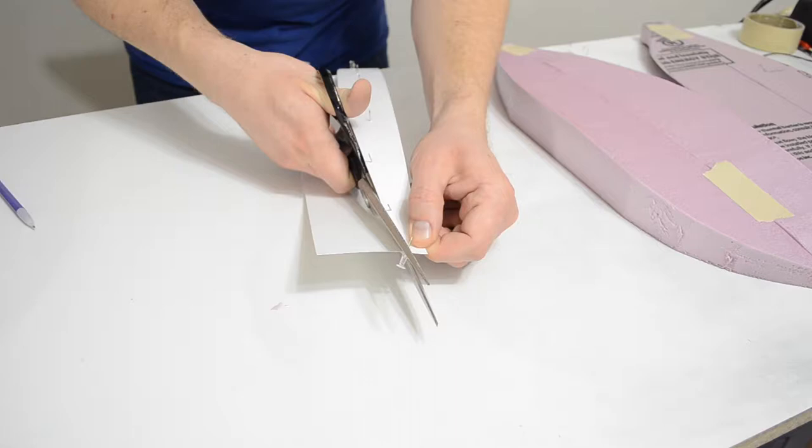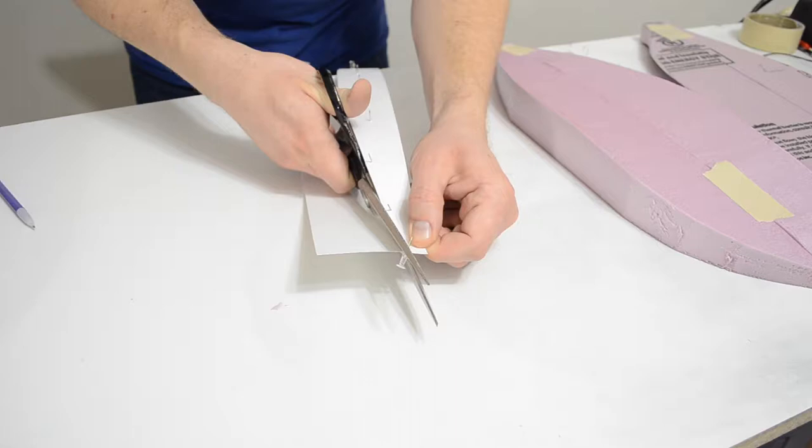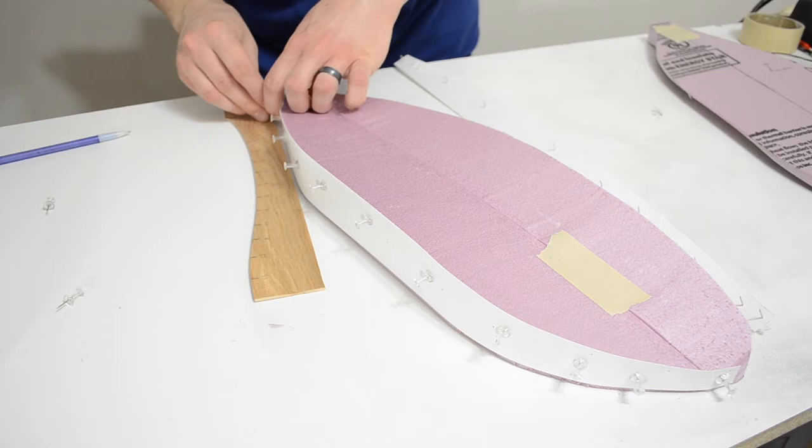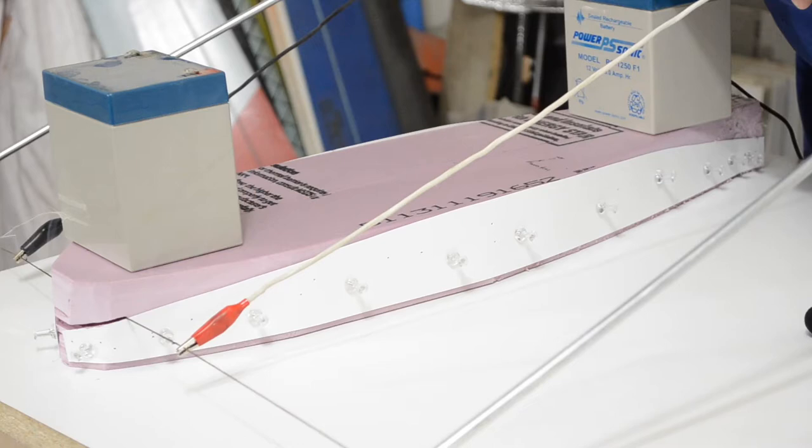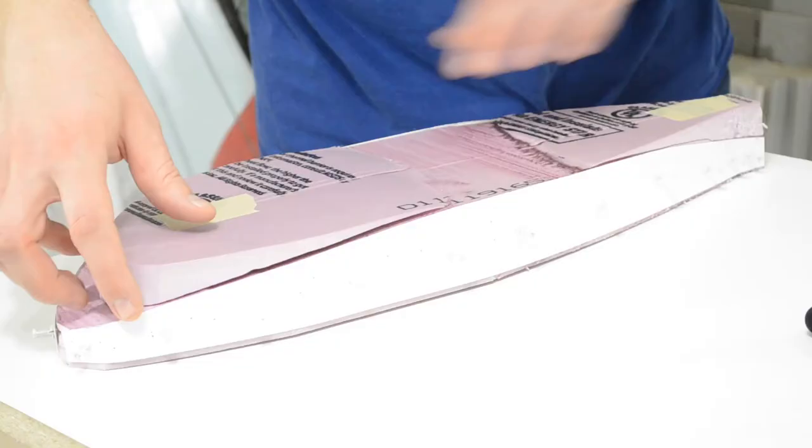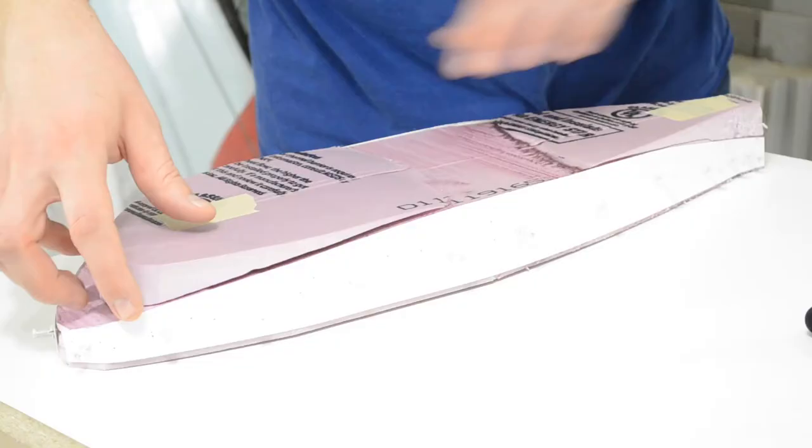I then shimmed those templates up using ¼ inch plywood. This will make the edges of my foam core a ¼ inch thick. With the templates shimmed up and pinned on both sides, I again dragged the hotwire across, this time cutting the upper part of the foam.